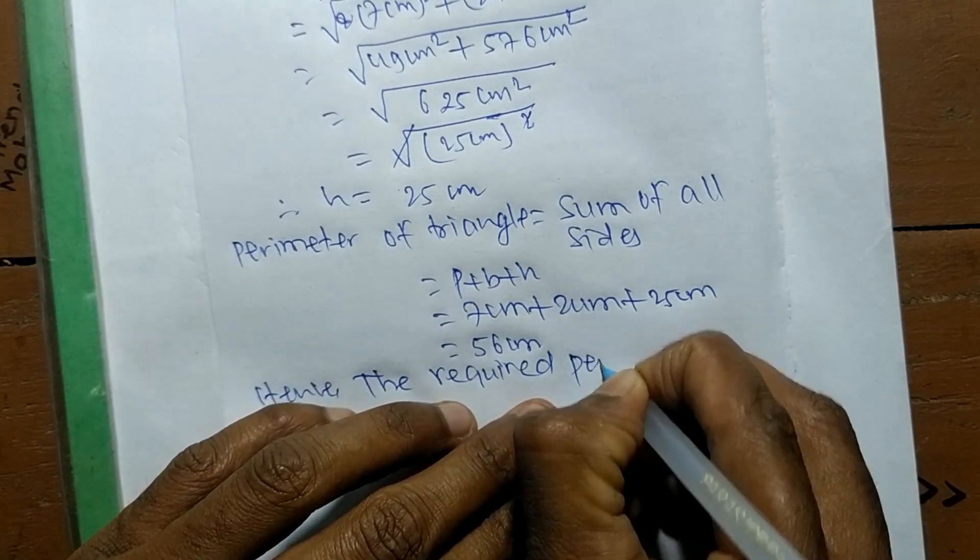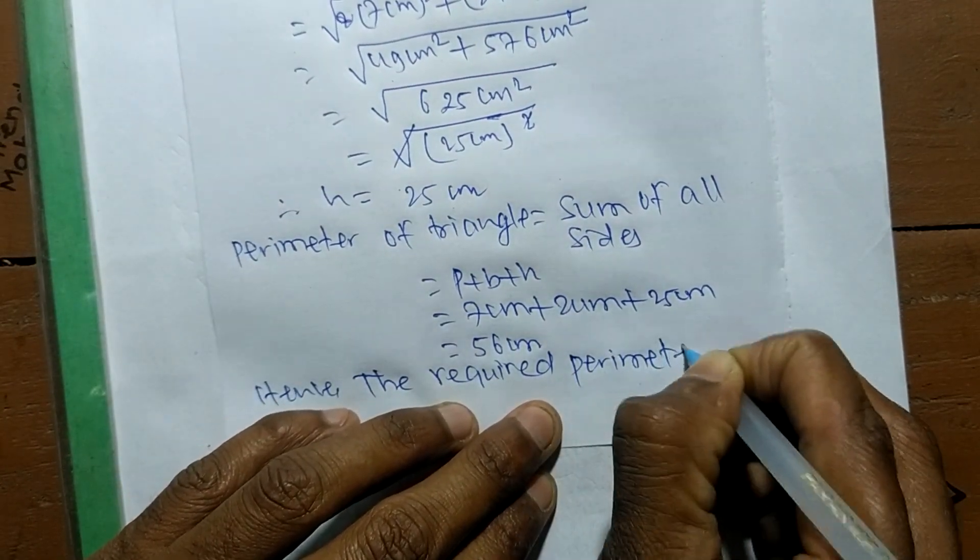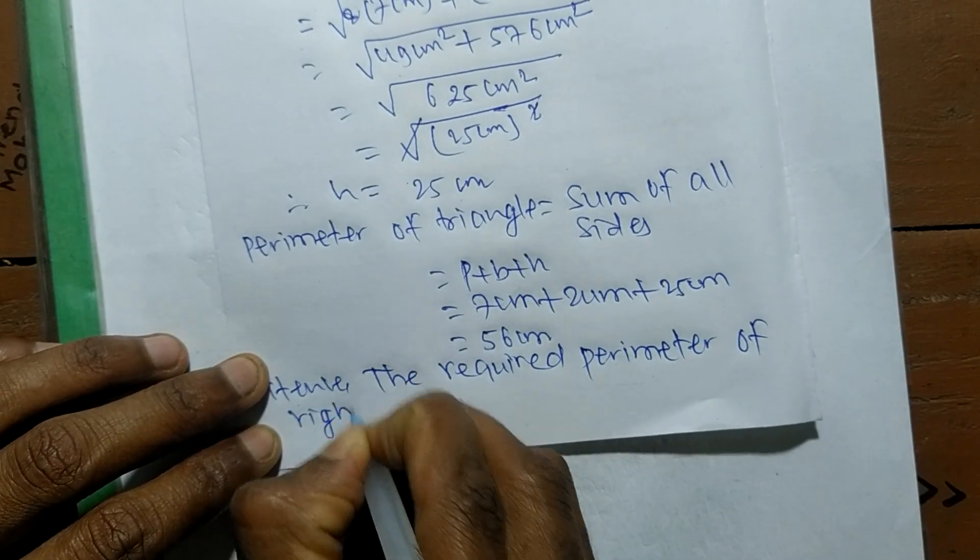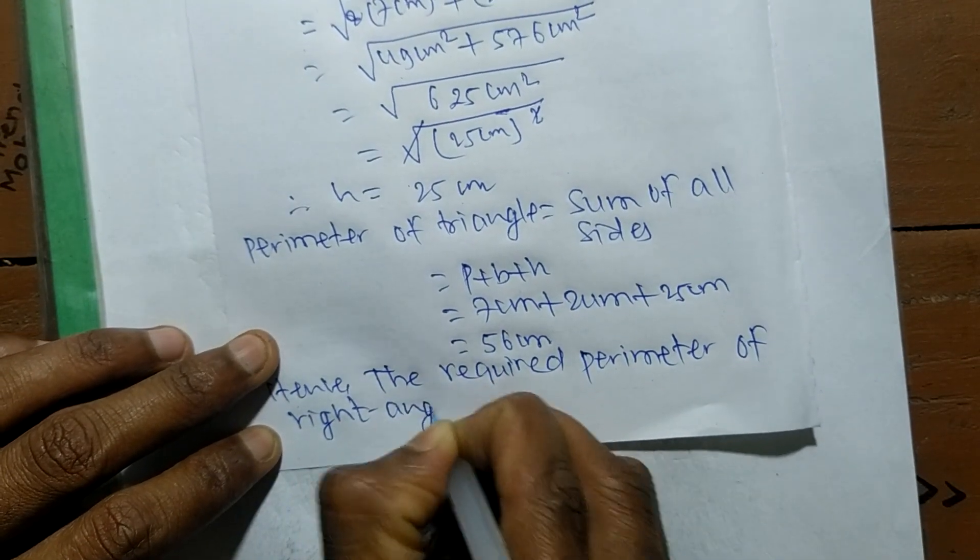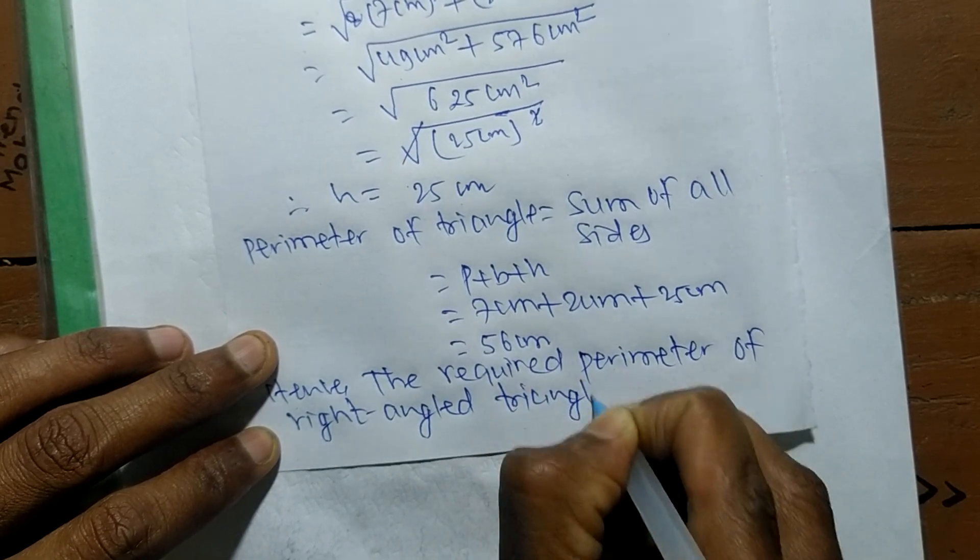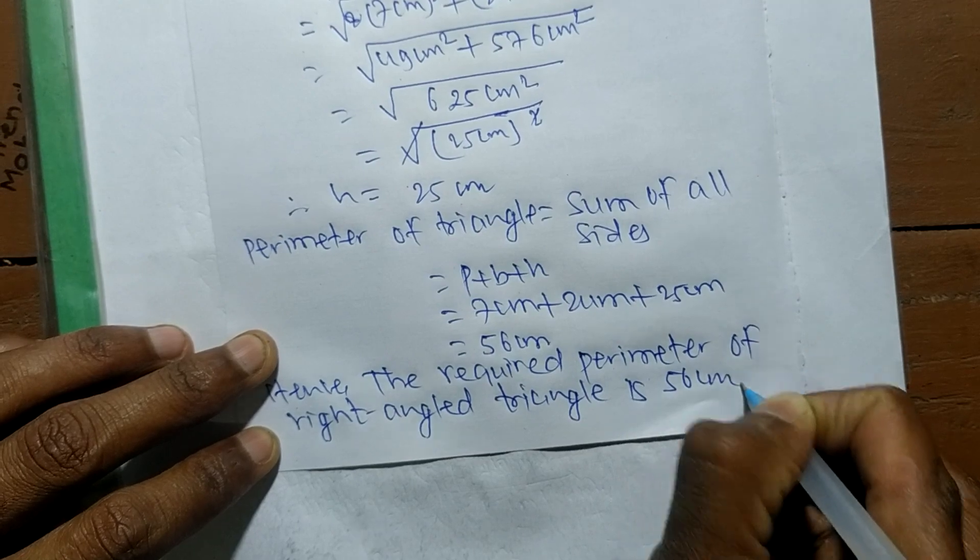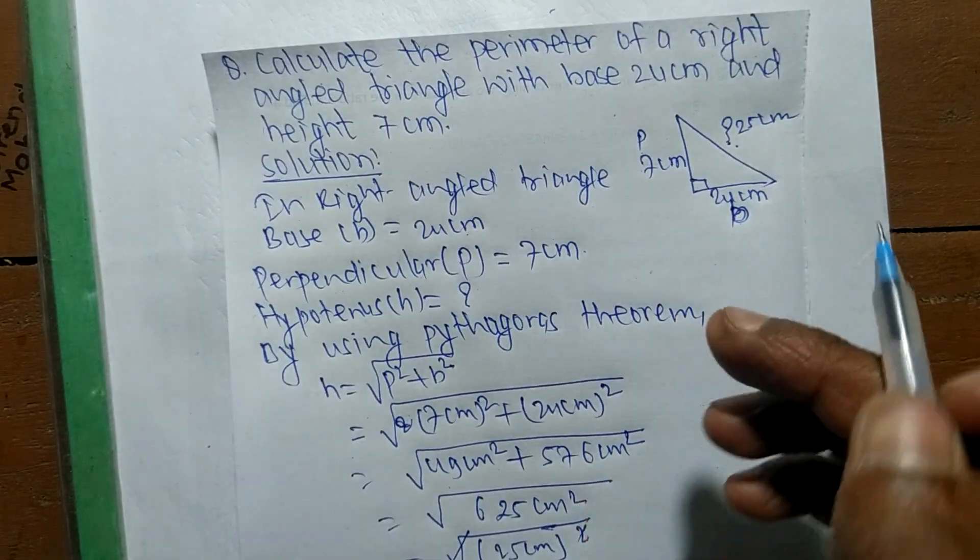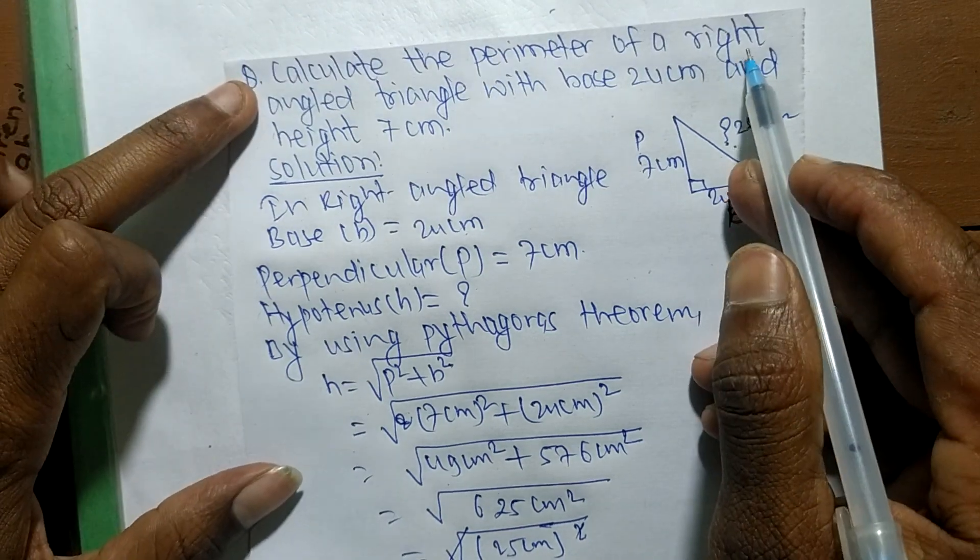While adding all these, we get 56 centimeters. Hence, the required perimeter of the right-angled triangle is 56 centimeters.